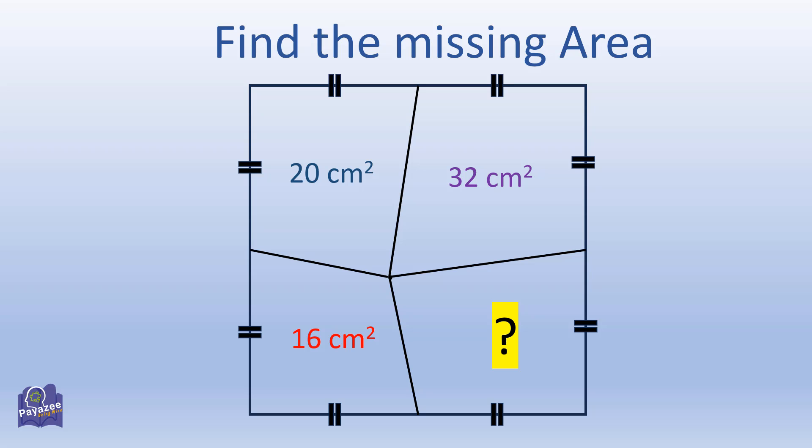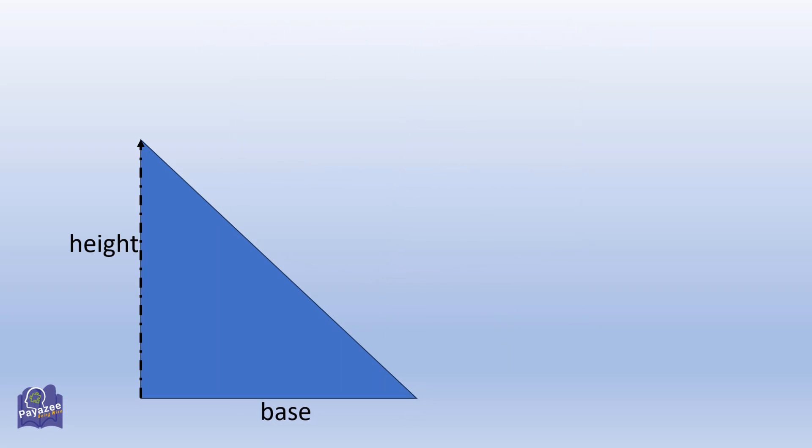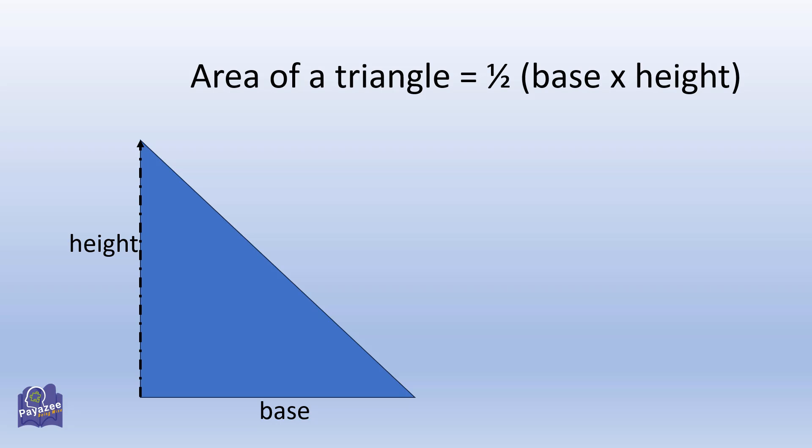Before solving this puzzle, let's first understand the area of triangle. Area of a triangle is half base into height. This formula is valid for any kind of triangles. All these triangles have the same area because the base and the height are the same.